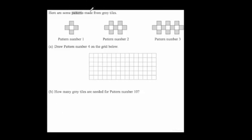It says here are some patterns made from grey tiles. So we've got pattern 1 with grey tiles and a grey tile in the middle. Pattern 2 has more grey and white tiles, and so on.